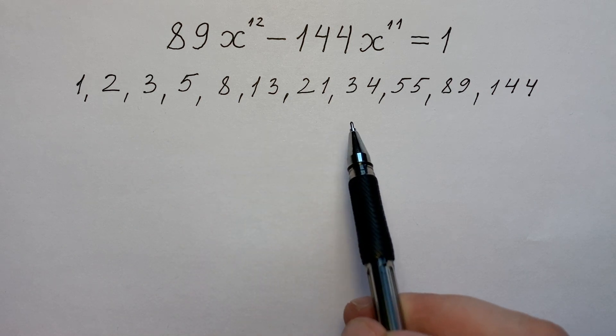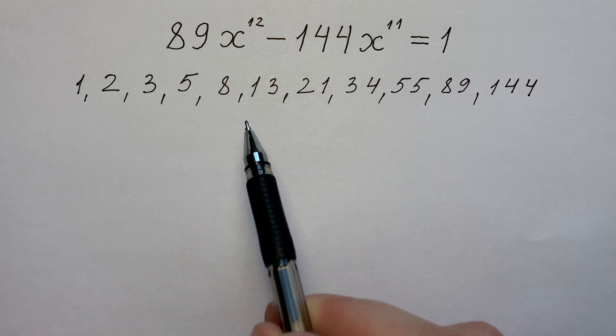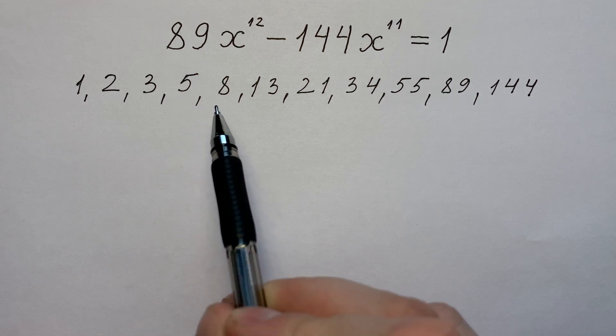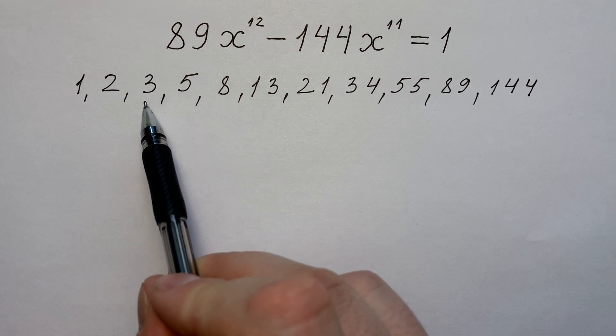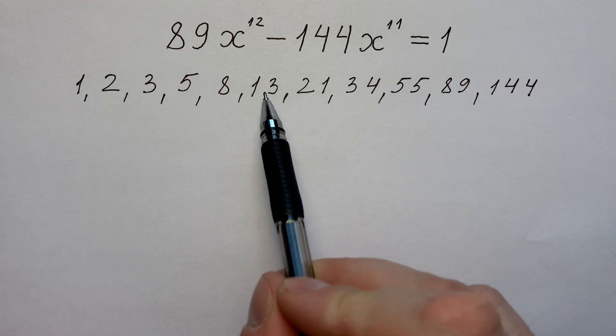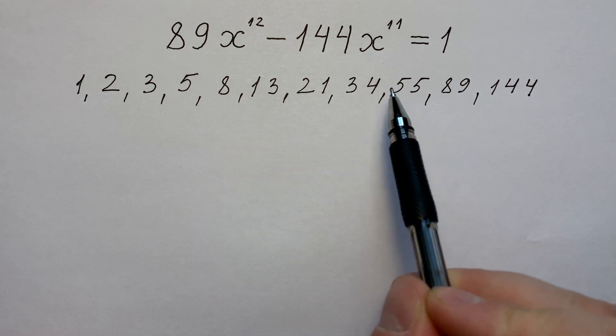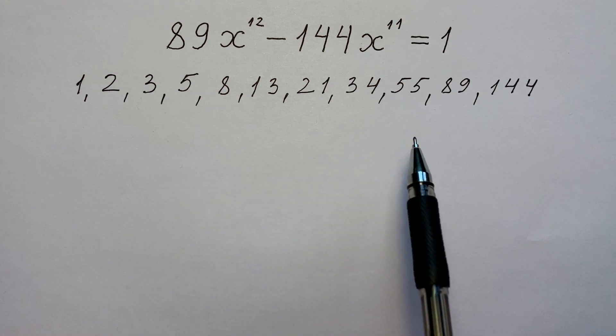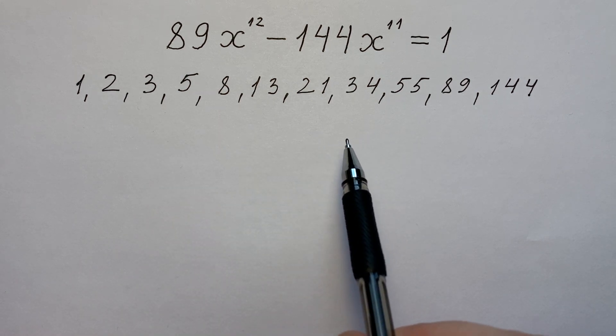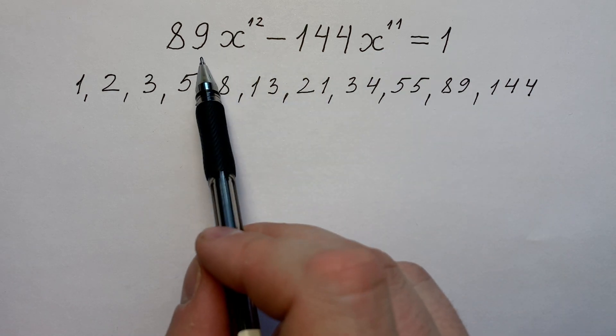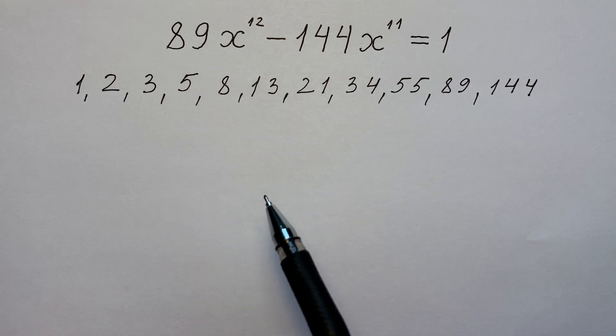It's a set of numbers in which each successive number is equal to the sum of the two previous ones. Like 8 equals 5 plus 3, 21 equals 13 plus 8, 89 equals 55 plus 34. And I think it's not accidental that last two numbers have been added to our equation. Maybe it's a hint.